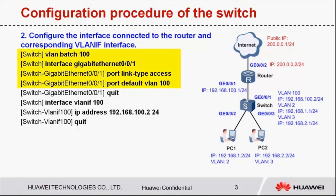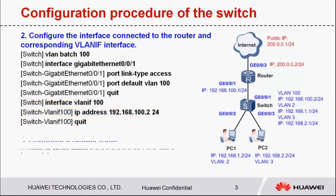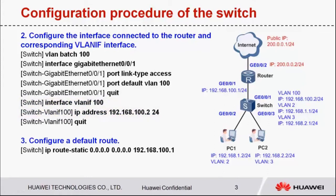Step 2: Configure the interface connected to the router as an access interface and add it to VLAN 100. Configure the corresponding VLAN IF interface. The IP address of VLAN IF 100 is 192.168.100.2. Step 3: Configure a default route. The next hop address of the default route is 192.168.100.1, which is the IP address of the router interface.